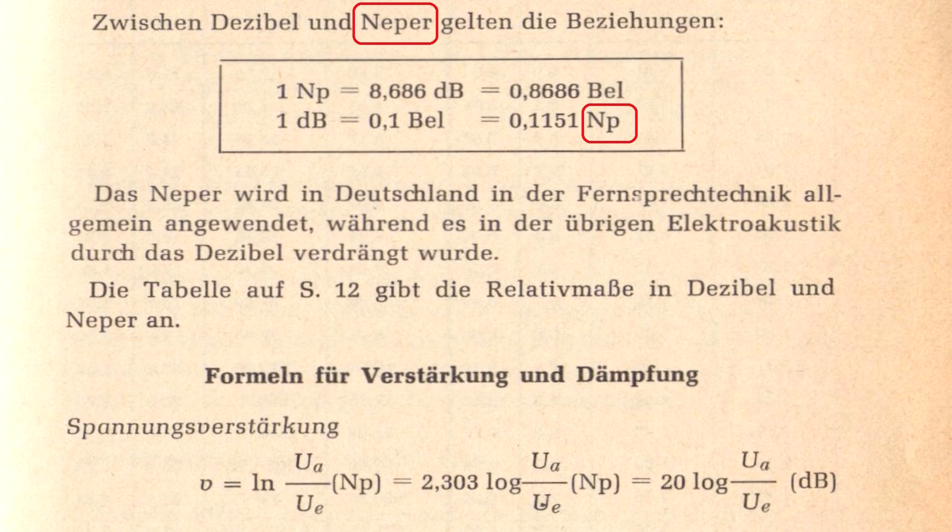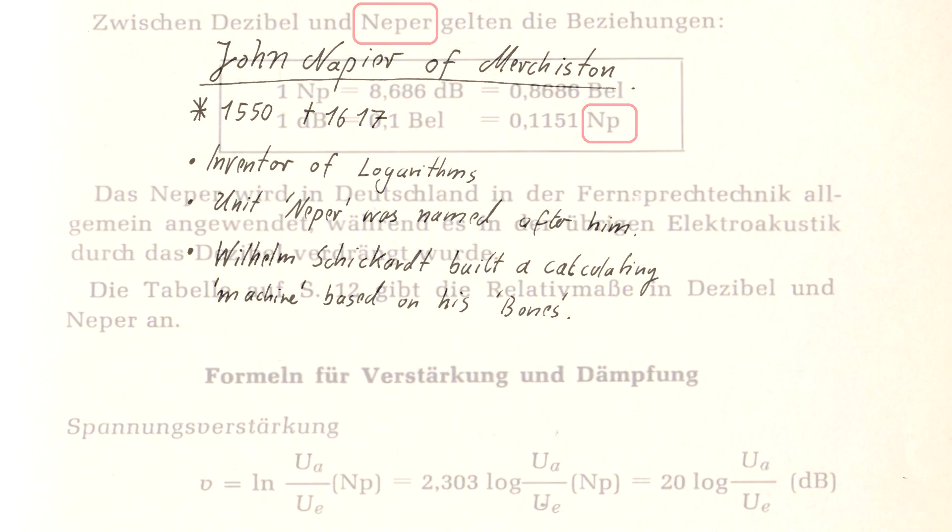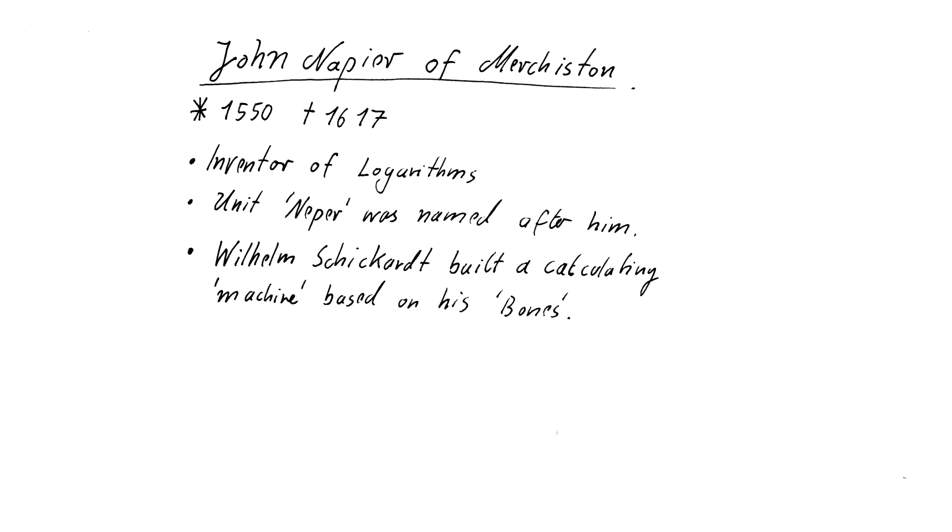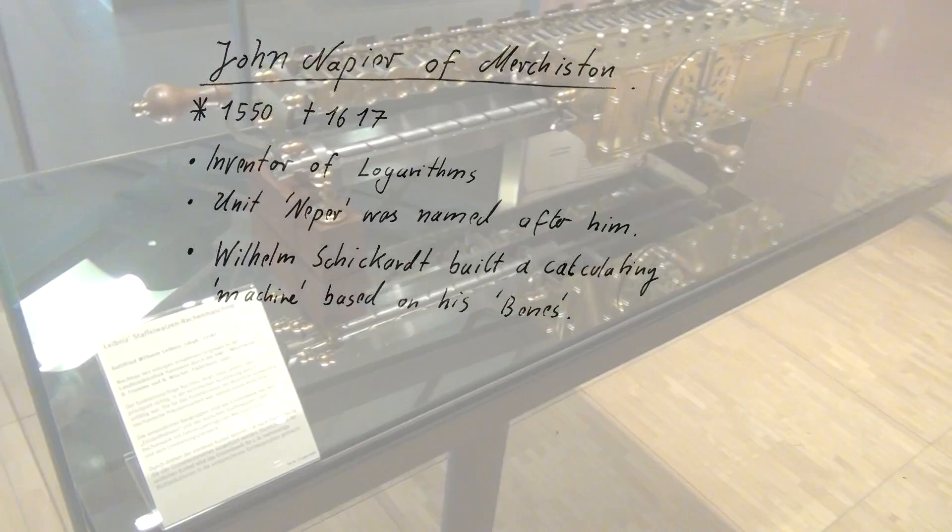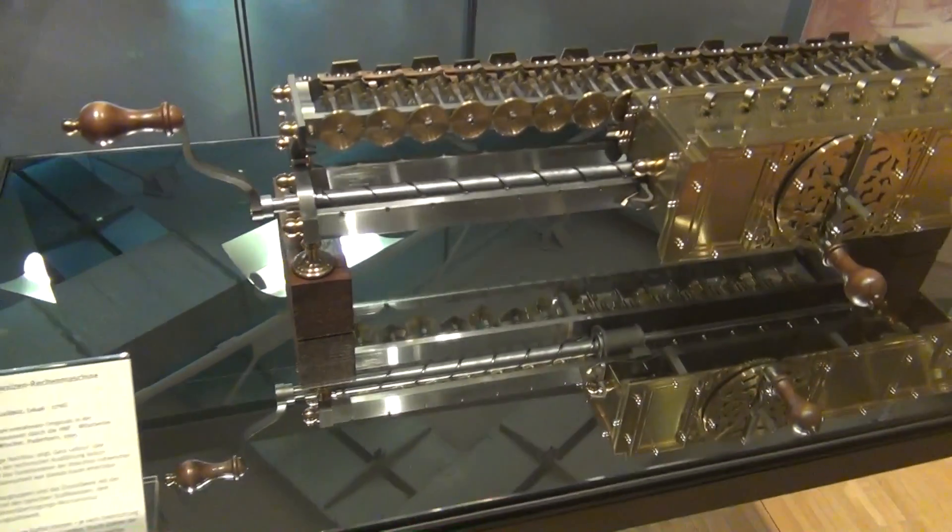A German astronomer by the name Wilhelm Schickert was known to be the inventor of a mechanical calculating device which was based on Napier's bones. But about the calculating devices and machines of Schickert, Pascal and Leibniz you will hear in the next episode.